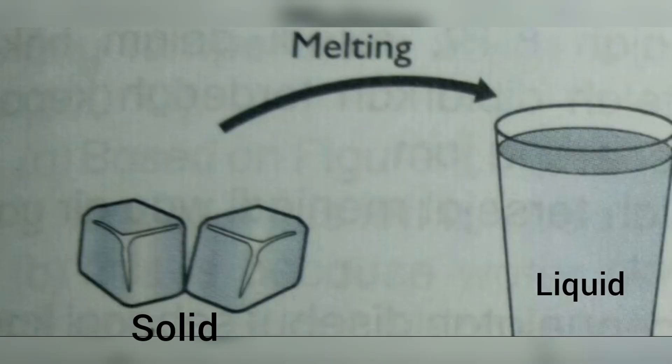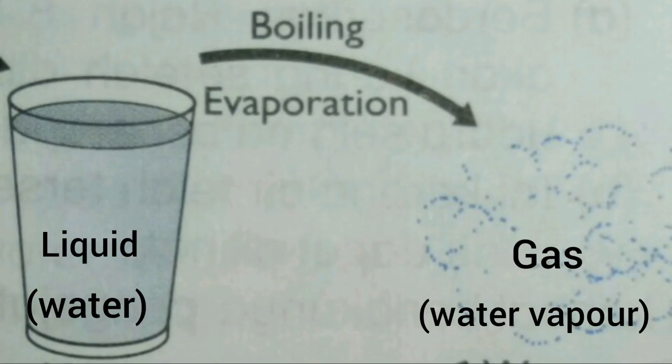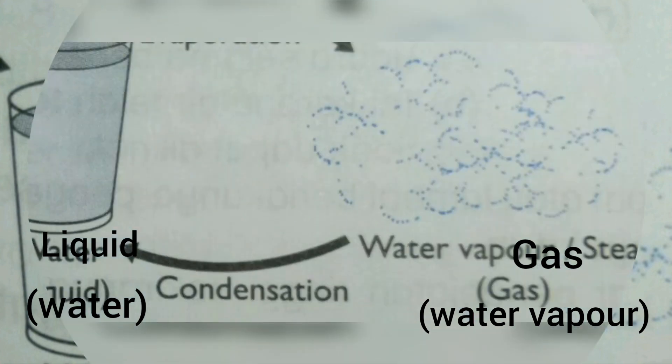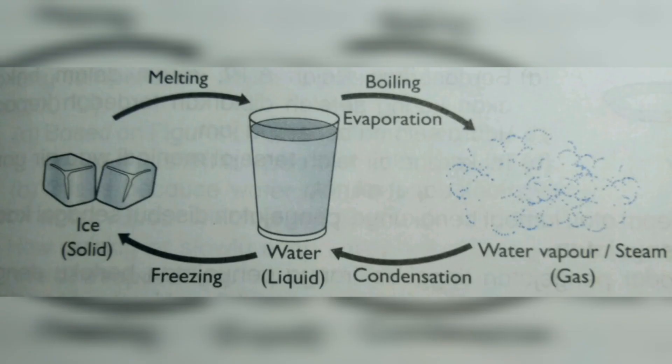Let me summarize today's lesson. When solid changes to liquid, it is called the melting process. When liquid changes to solid, it is called the freezing process. When liquid changes to gas, it is called the boiling or evaporation process. And finally, when gas changes to liquid, it is called the condensation process. That's all for today, thank you.